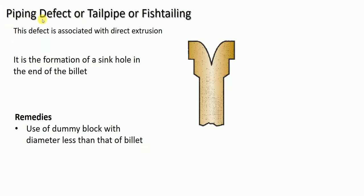The second defect is the piping defect, also called the tailpipe defect or fish tailing defect. Here, this one is the extruded object. At the end of this extruded object, a hole-like structure is formed — that structure is nothing but the piping defect. Piping defect is associated with the direct extrusion process, and it is the formation of a sinkhole at the end of the billet.